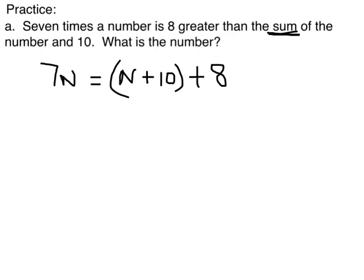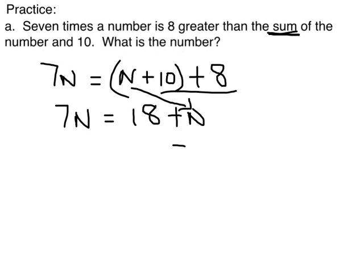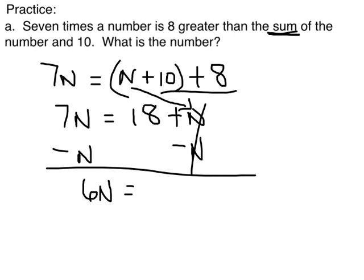All right, I've got to get a sum of this, and then I'm going to add 8. What is the number? All right, so here I've got like terms that I can combine. 7N is equal to 10 plus 8 is 18 plus N. I've got this N here that has to come down. All right, now I need to get this N over to the left-hand side, so I'm going to subtract N minus N. I've got rid of that, and I have 7 minus 1 is 6N is equal to 18. Then when I divide by 6 on both sides, I'm going to see that N is equal to 3.